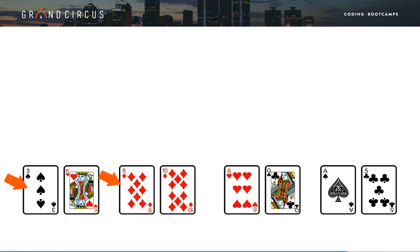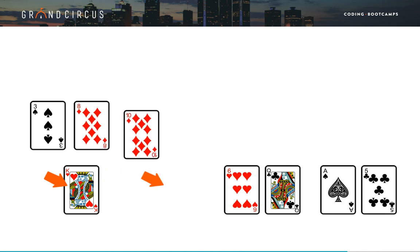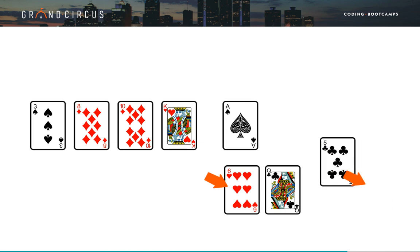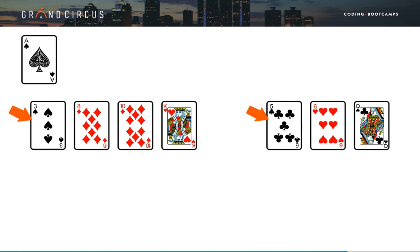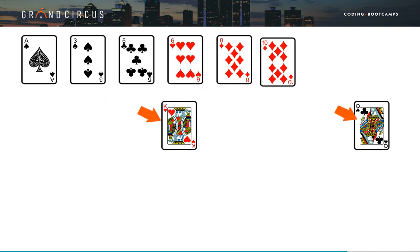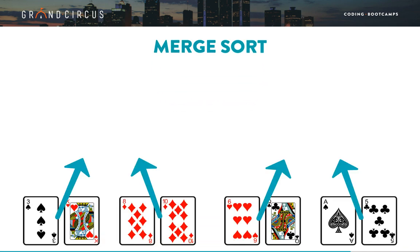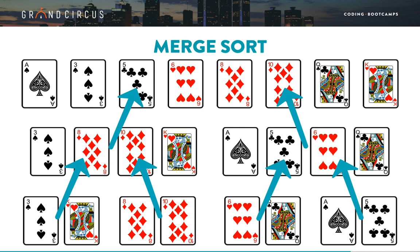Looking at the first two stacks: three is smaller than eight; next, eight is smaller than king; then ten is also smaller than king; finally, king is the last card left. We'll repeat the process for the next two stacks, and then repeat one more time to bring the larger sorted stacks back into the complete hand. A comes before three, three before five, five before eight, six before eight, and so on. This is actually a well-known algorithm called merge sort, because it involves repeatedly merging two sorted arrays or stacks of cards into a larger sorted array. It is a great example of a divide and conquer algorithm — it takes a big problem and breaks it down into smaller, more manageable parts.